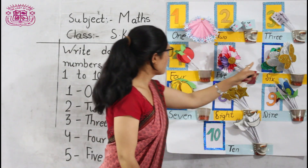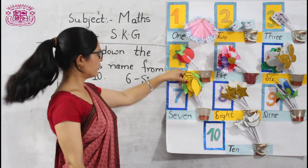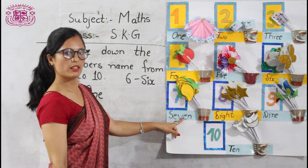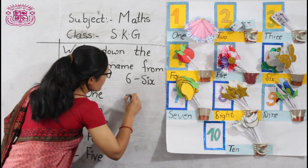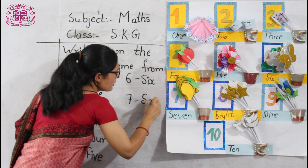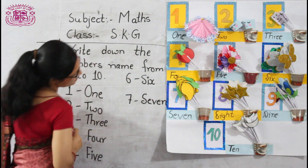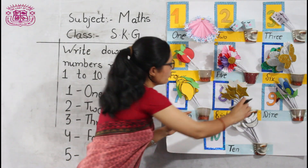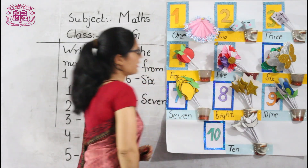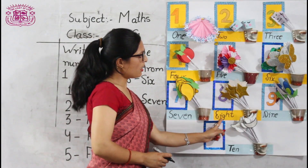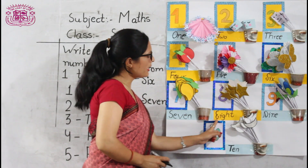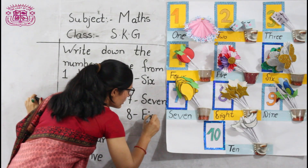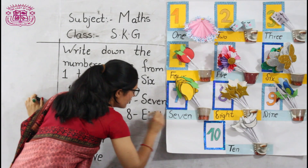What comes after 6? 7. Thank you. What is the spelling of 7? S-E-V-E-N. 7. Very good. What comes after 7? 8. Okay. What is the spelling of 8? E-I-G-H-T. 8.